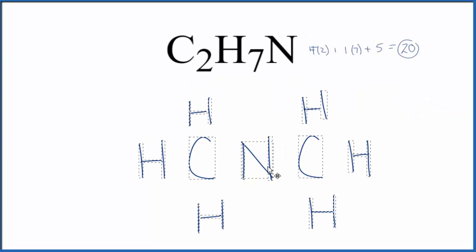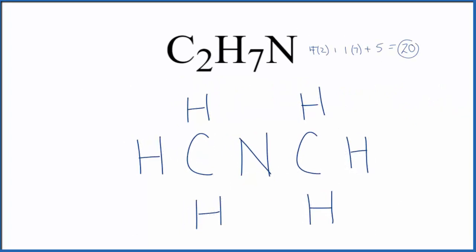So I've added the hydrogen atoms here around the carbons. Those are the methyl groups in dimethylamine. And we've used six hydrogens. Remember we have seven here. So let's put a hydrogen right here on the central nitrogen atom. So we have these 20 valence electrons here.